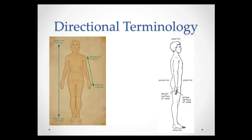For example, the eyes are superior to the mouth because they're closer to the head. The nose is inferior to the eyes because it's closer to the feet. Anterior means toward the front of the body; posterior means toward the back. The eyes are anterior to the ears, and the ears are posterior to the eyes.